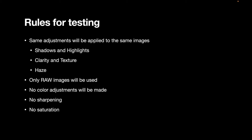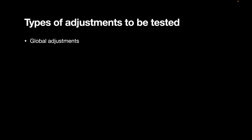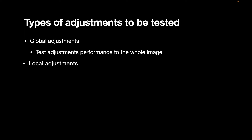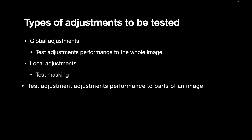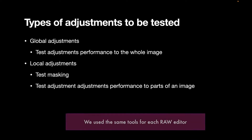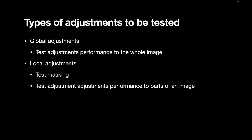We will perform two types of adjustments. In global adjustments, we want to compare the quality of adjustments to the whole image. We're also going to do some local adjustments, where we will observe the performance of the masking and the quality of the adjustments on specific parts of an image. I hope everybody is satisfied — we tried to make the adjustment process similar for both editors using equivalent tools. With that out of the way, let's now look at the slideshow comparison.